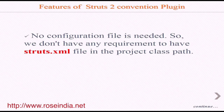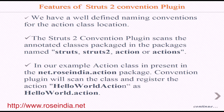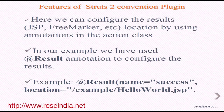The convention plugin comes with many handy features for developing Struts 2 based web applications. Features include: no configuration file is needed, so there is no requirement to have a struts.xml file in the project classpath. There are well-defined naming conventions for the action class location. The convention plugin scans annotated classes packaged in packages named struts, struts2, action, or actions. In our example, action classes are present in the net.roseIndia.action package, and the convention plugin will register the action HelloWorldAction as hello-world.